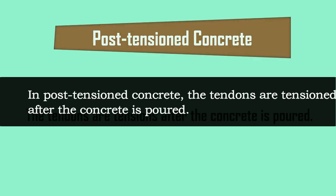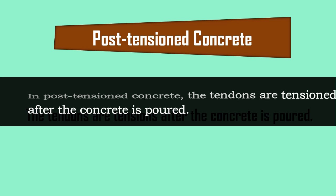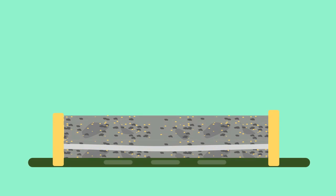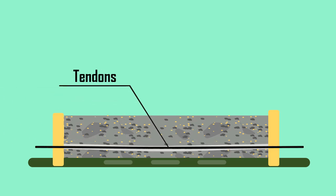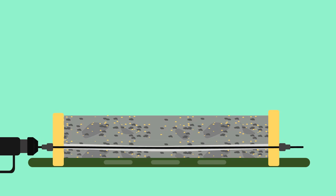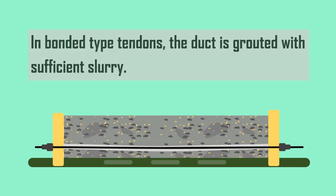Post-tensioned concrete. In post-tensioned concrete, the tendons are tensioned after the concrete is poured. Initially, the concrete is cast around the sheathing. The ducts are formed in the concrete in which tendons are placed. After the concrete hardens, the tendons are tensioned by hydraulic jacks and anchored. In case of bonded type tendons, the duct is grouted with sufficient slurry.